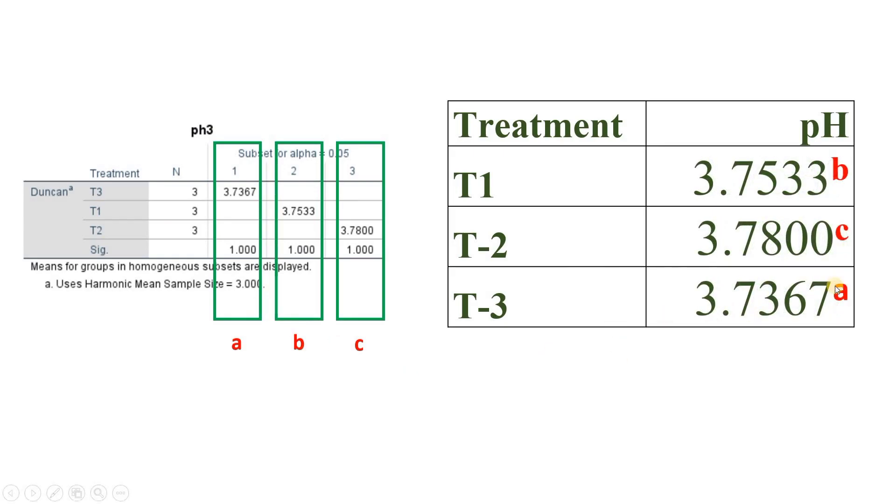And T2 is in only the C column, so it will be C. So each treatment has significant difference with each other.